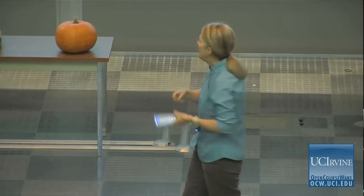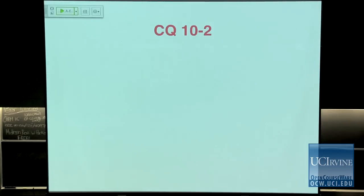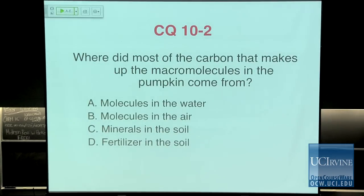Do we have lipids? Yes — in the cell membrane, in the rough ER, in the smooth ER. And nucleic acids? Yes — in the nuclei of the cells that make up the pumpkin. So all four types of macromolecules are present because the pumpkin is made up of cells. What do they all have in common? They are all carbon-based molecules — they have carbon-based skeletons. So where did most of the carbon that makes up those macromolecules come from?